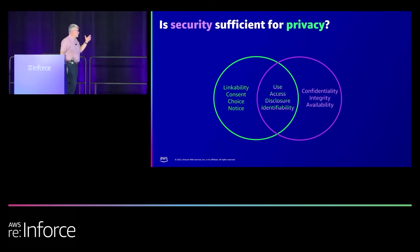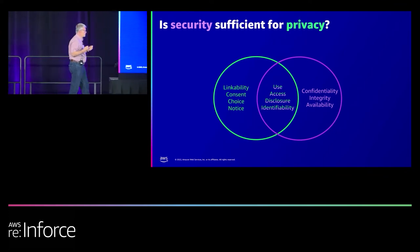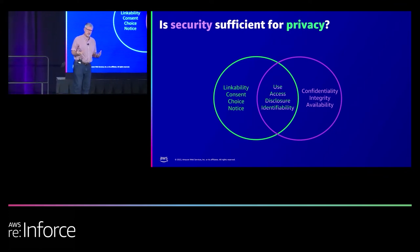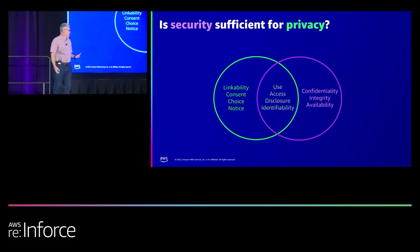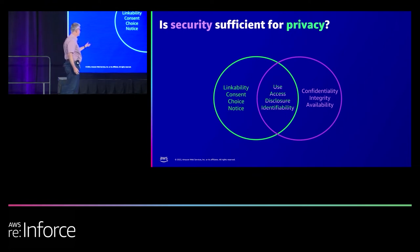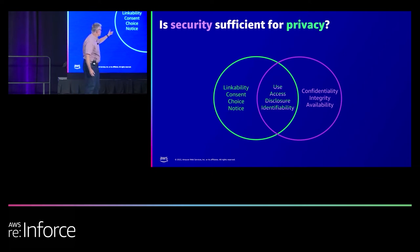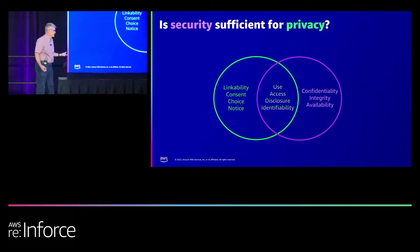What's the difference between privacy and security? They're related and they overlap, but they have different tangible outcomes. Confidentiality, integrity, and availability are traditional security outcomes. Privacy has different tangible outcomes: linkability, consent, notice, choice. There's also a middle area where they overlap — use, access, disclosure, identifiability.